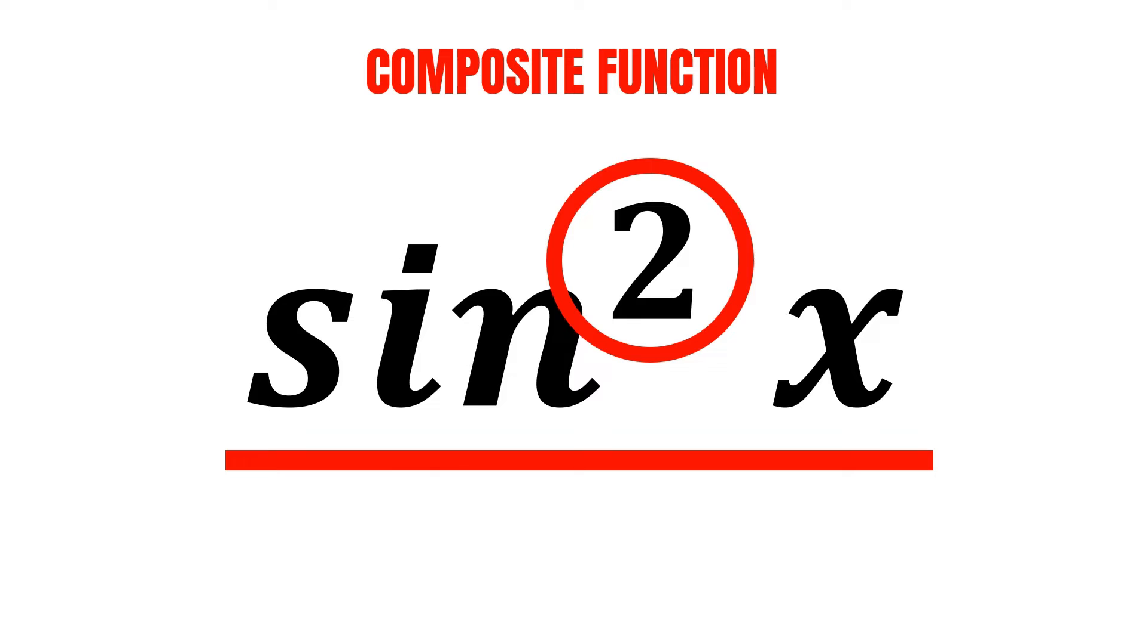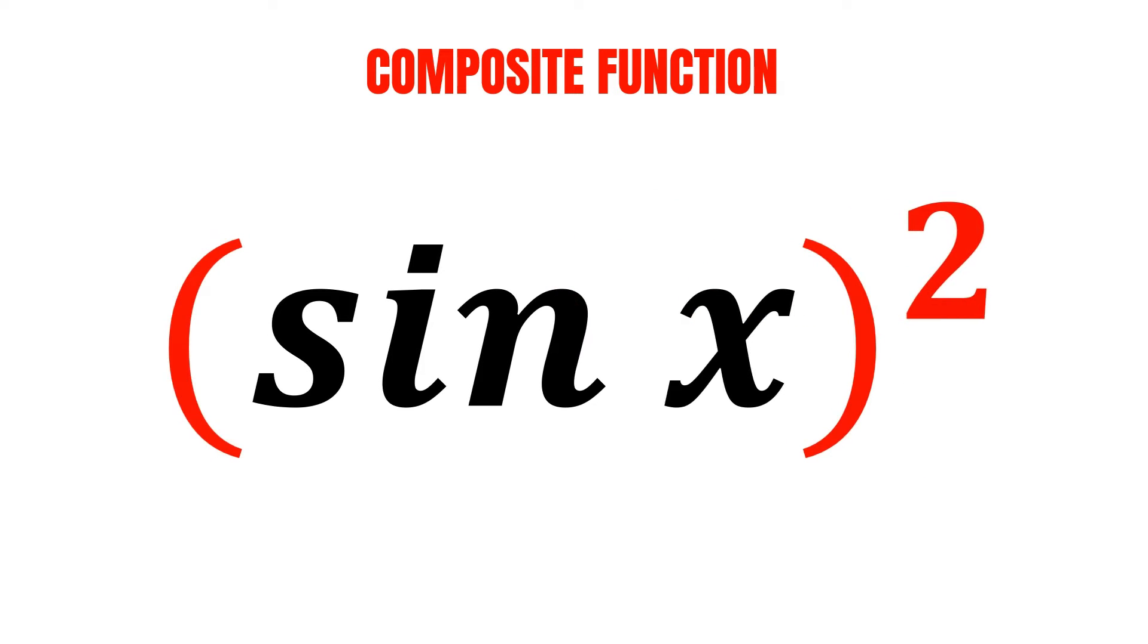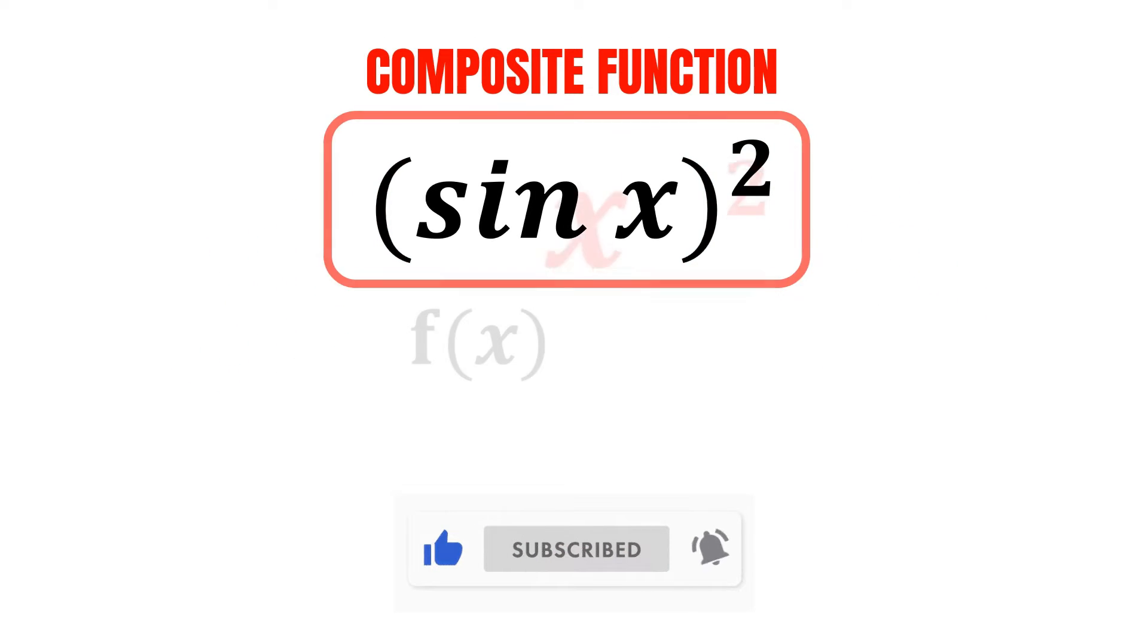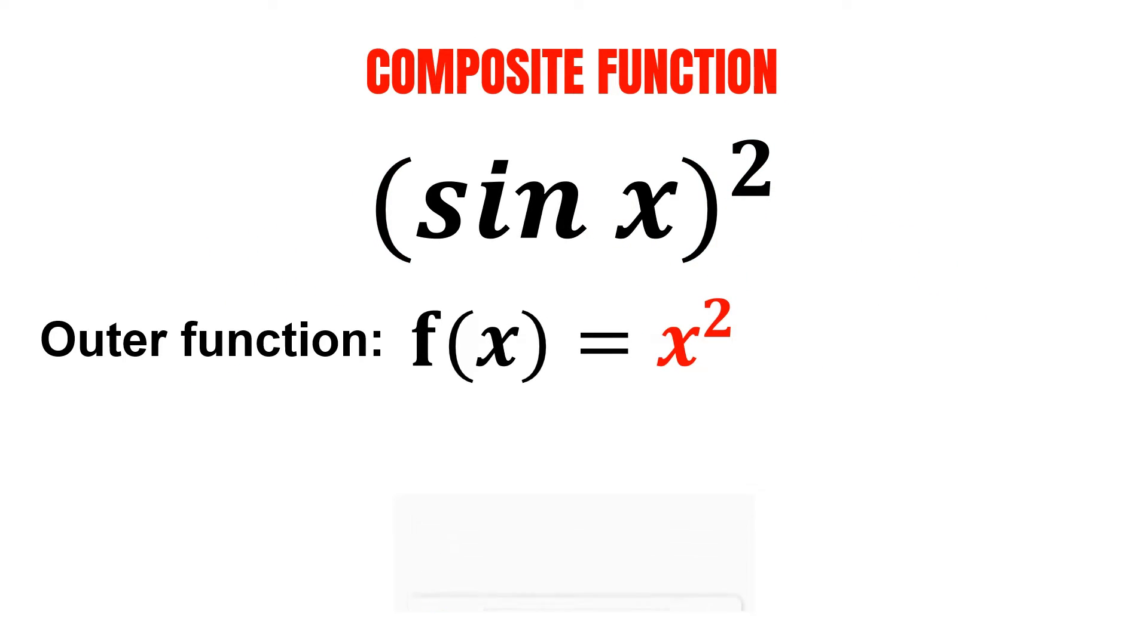You see, this sine squared x actually means sine x raised to the power of 2, and it is a composite function. We have x squared as our outer function, which we will denote as f of x. And our inner function is sine x, denoted as g of x.